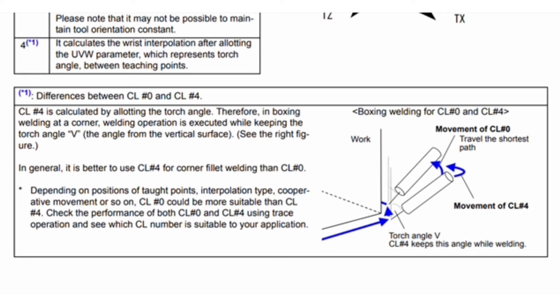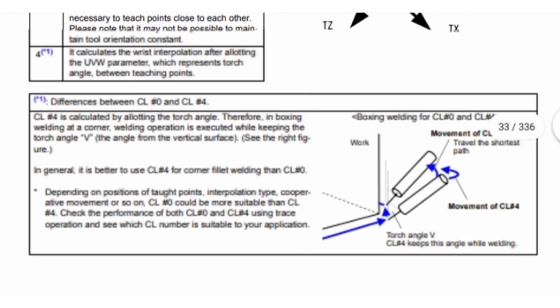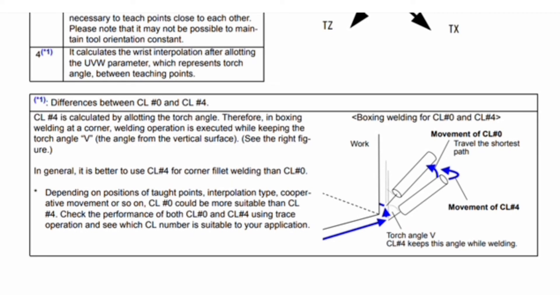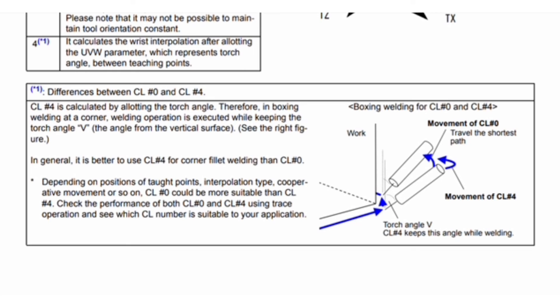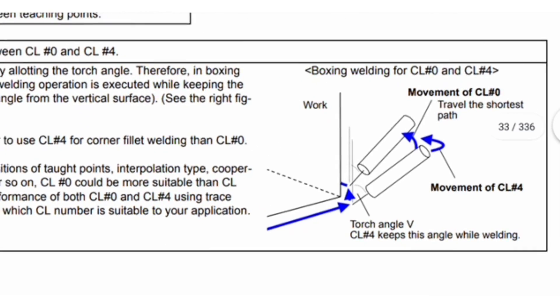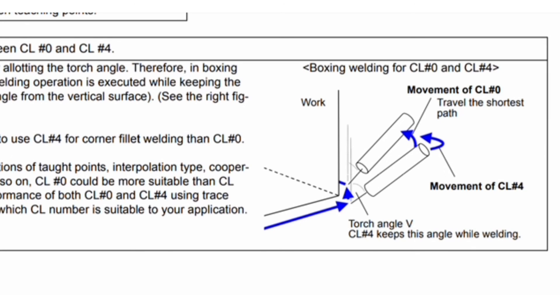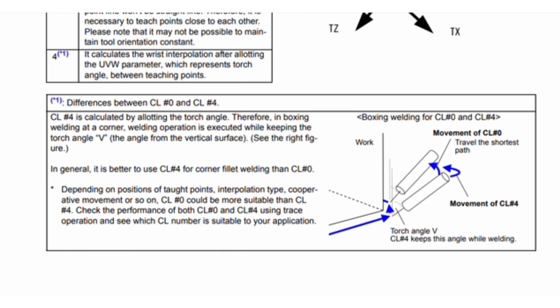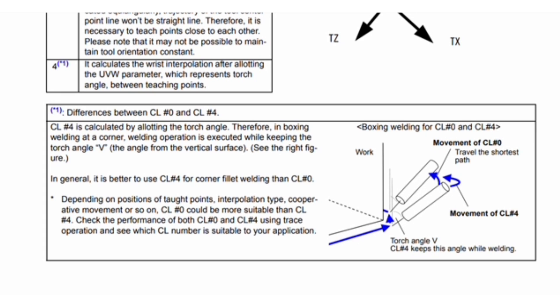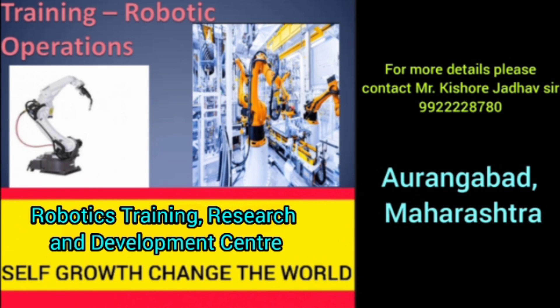The difference between CL#0 and CL#4: CL#4 is calculated by allotting the torch angle, so in boxing welding at a corner, the operation is executed while keeping the torch angle V (the angle from the vertical surface). CL#4 keeps this angle while welding; CL#0 travels the shortest path. In general, it is better to use CL#4 for corner fillet welding than CL#0, though depending on positions of taught points, interpolation type, and cooperative motion, CL#0 could be more suitable. Use trace operation to check both and determine which CL number suits your application.